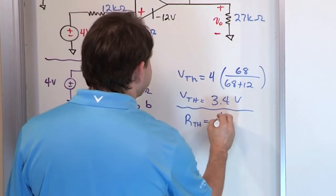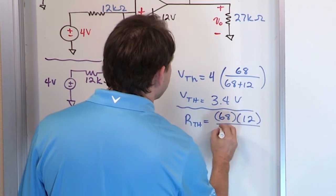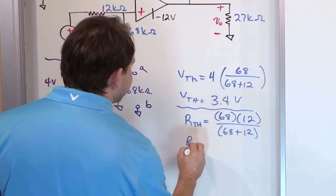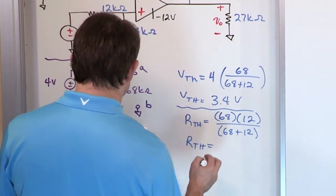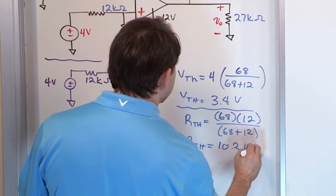So the parallel combination is the 68, basically it's product over the sum. So 68 times 12 over 68 plus 12. And when you multiply and divide, you're going to get a Thevenin equivalent resistance of 10.2 kilo ohms.